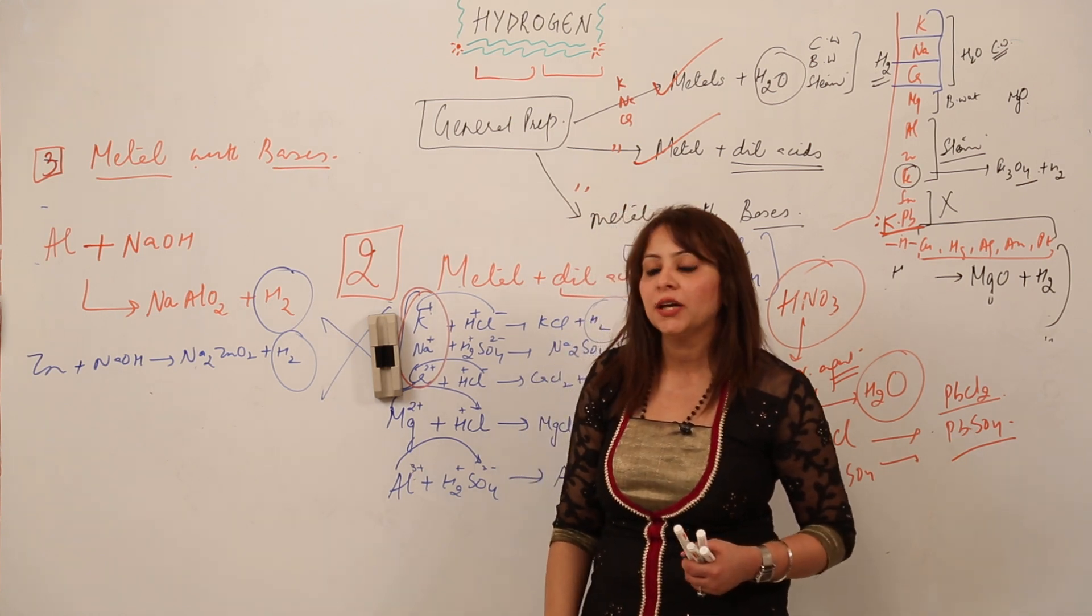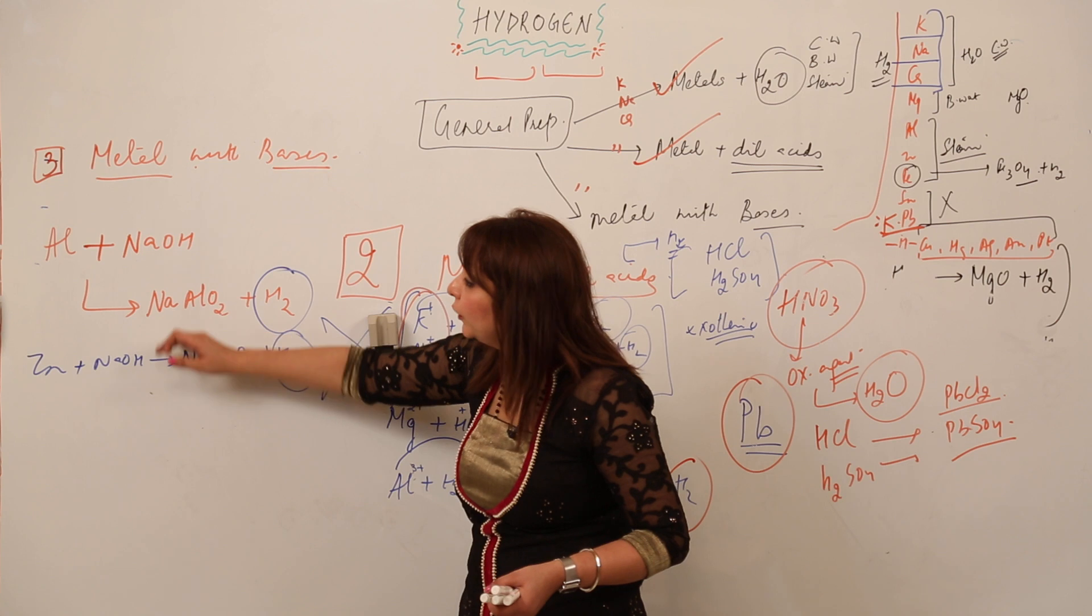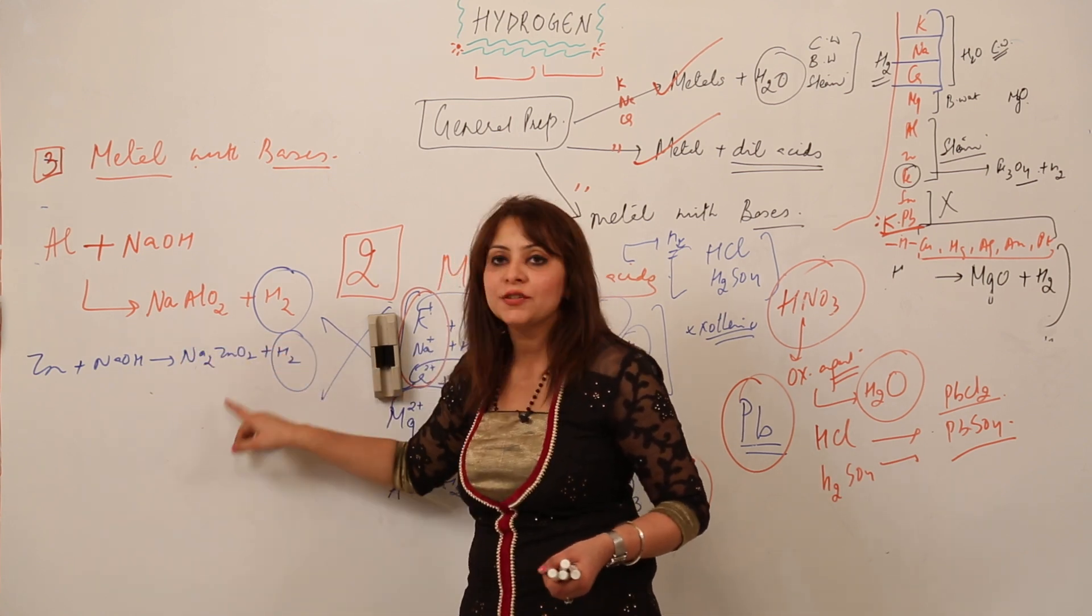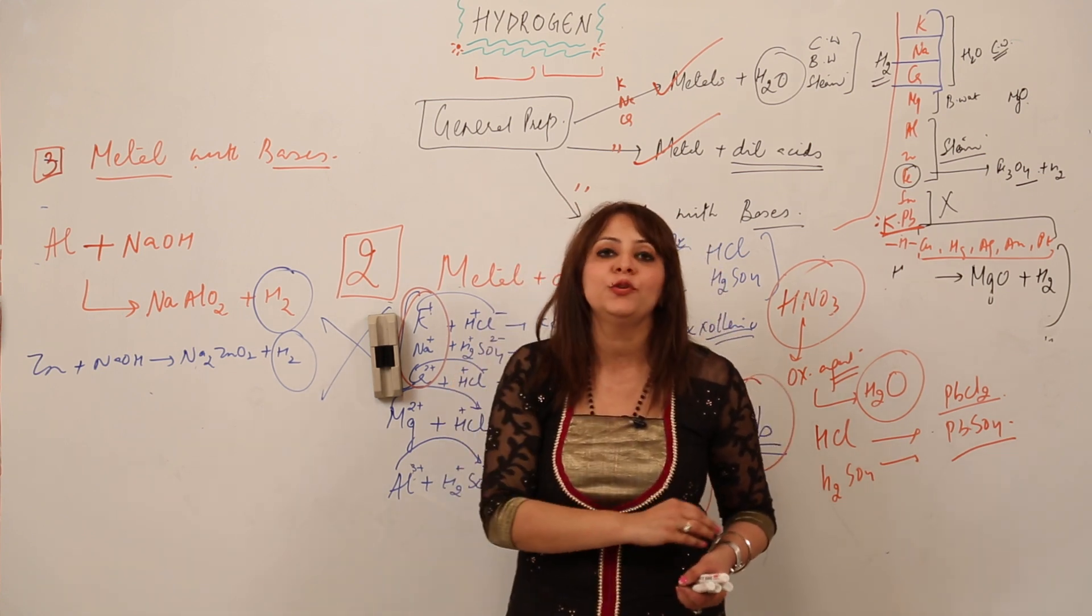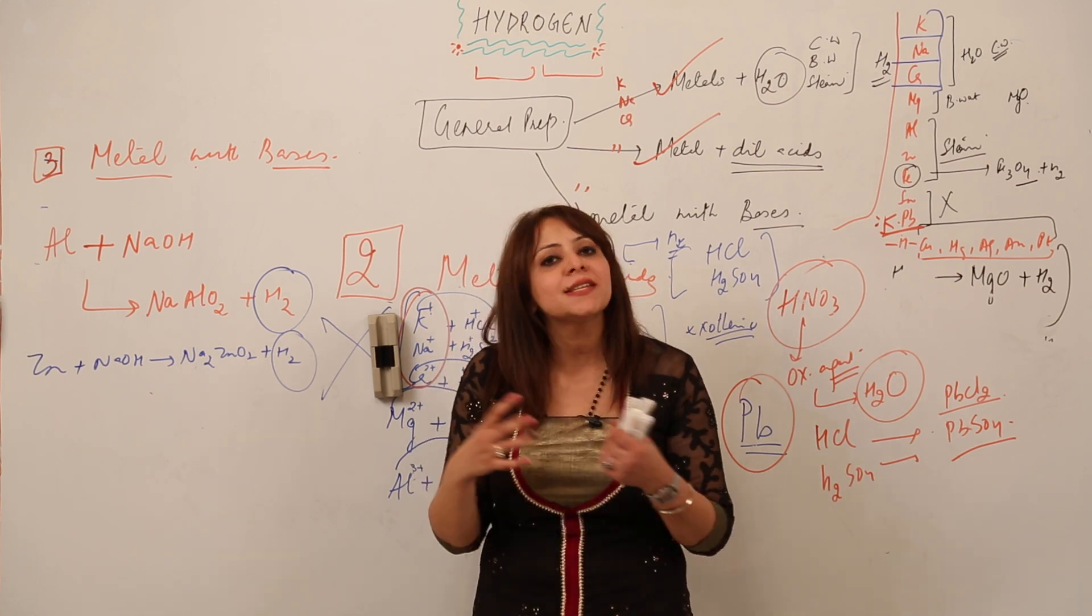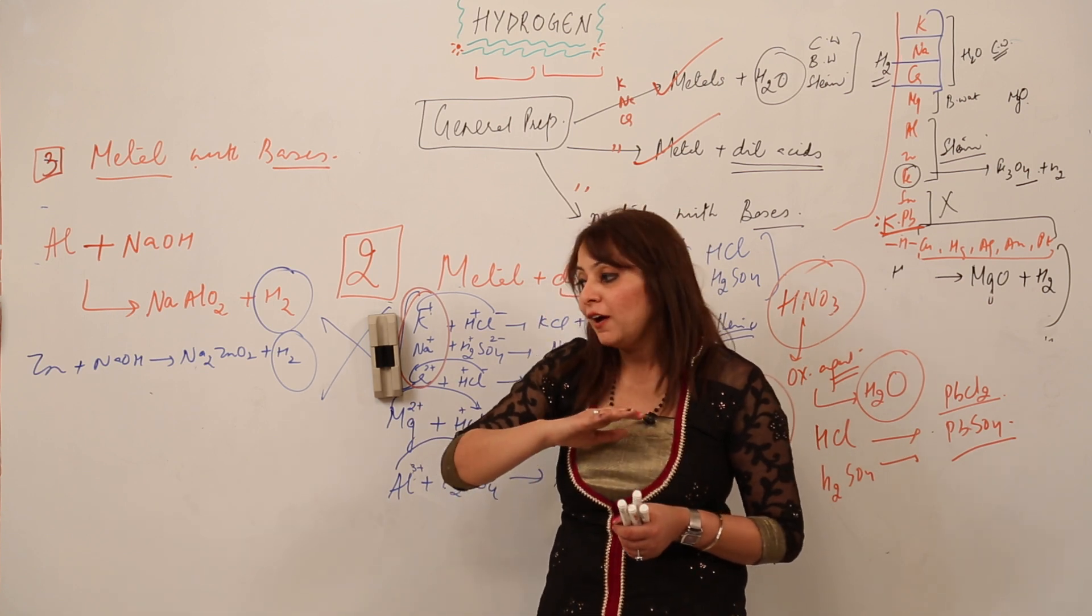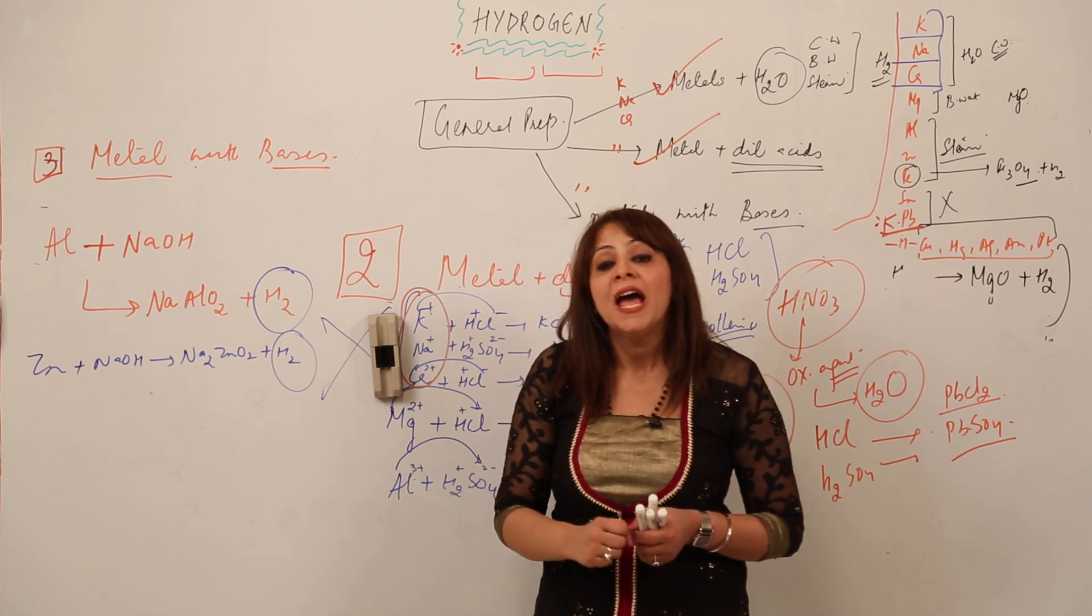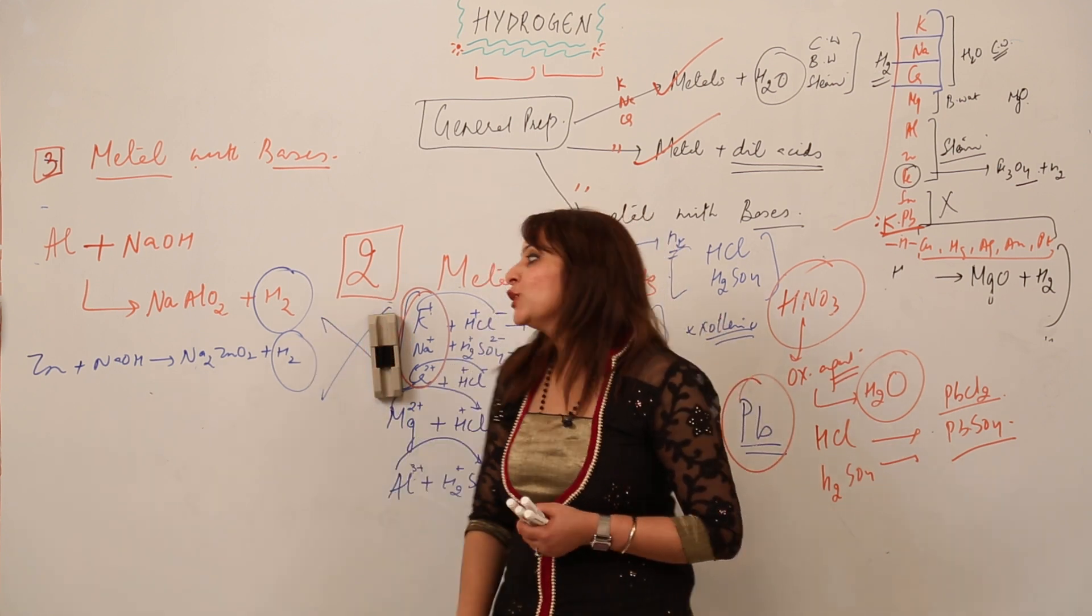One thing must be flashing in your mind: when I have written sodium aluminate I haven't written this 2, and in this case I have written 2. Don't get confused with 2, 3, 4 used in the chemical formula. It is just a matter of valency. I told you in many lectures, just don't be afraid of chemical formulas, just learn the valency. They will act as a tool and you will get through chemistry very well.